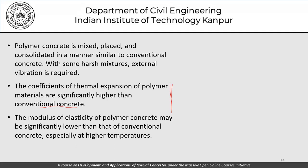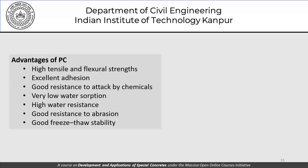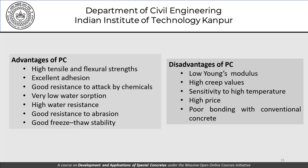The properties of the hardened polymer binder differ considerably from hardened cement paste, which is evident in the coefficient of thermal expansion, modulus of elasticity, and strength of polymer concrete. As for advantages: high tensile and flexural strengths, excellent adhesion, good resistance to chemical attack, very low water absorption, high water resistance, good resistance to abrasion, and good freeze-thaw stability. Disadvantages include low Young's modulus, high creep values, sensitivity to high temperatures, high price, and poor bonding with conventional concrete.